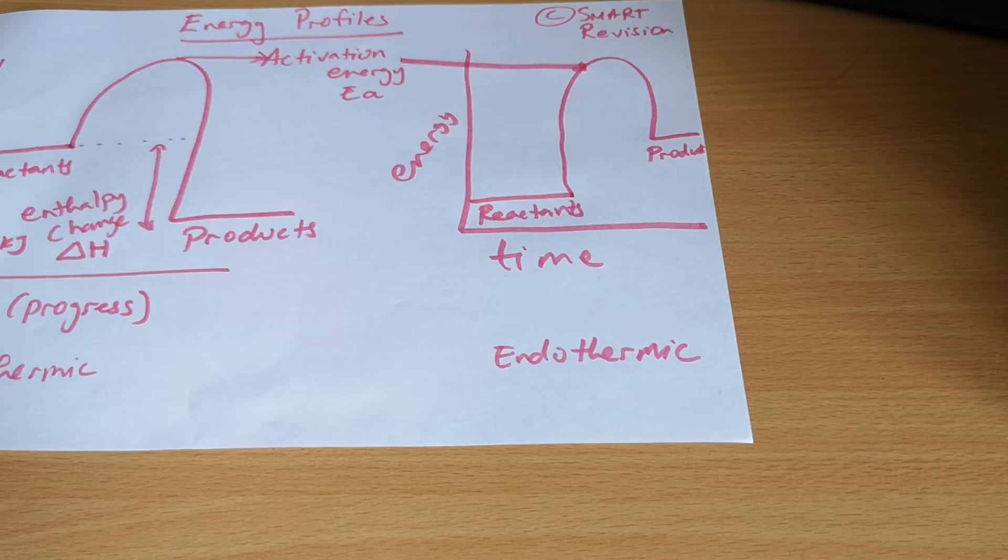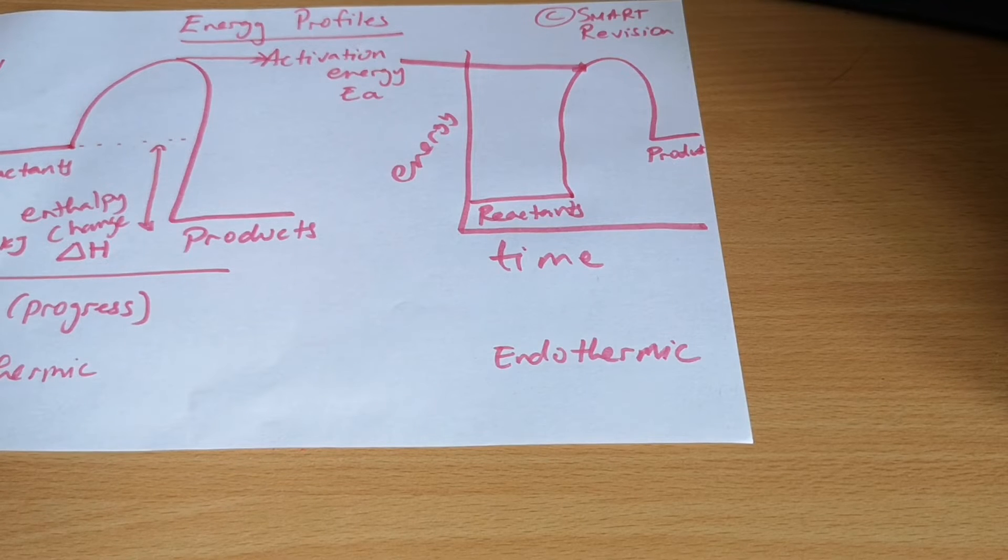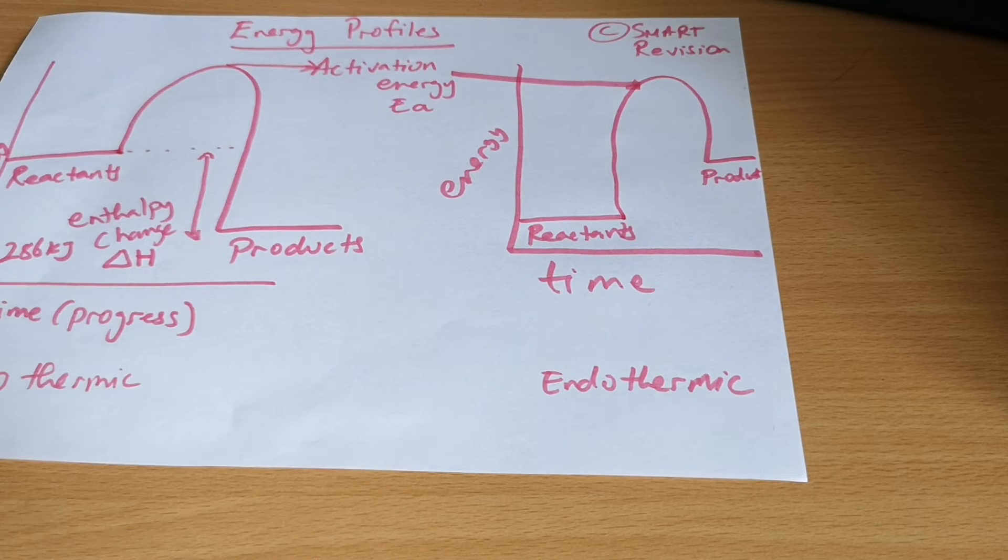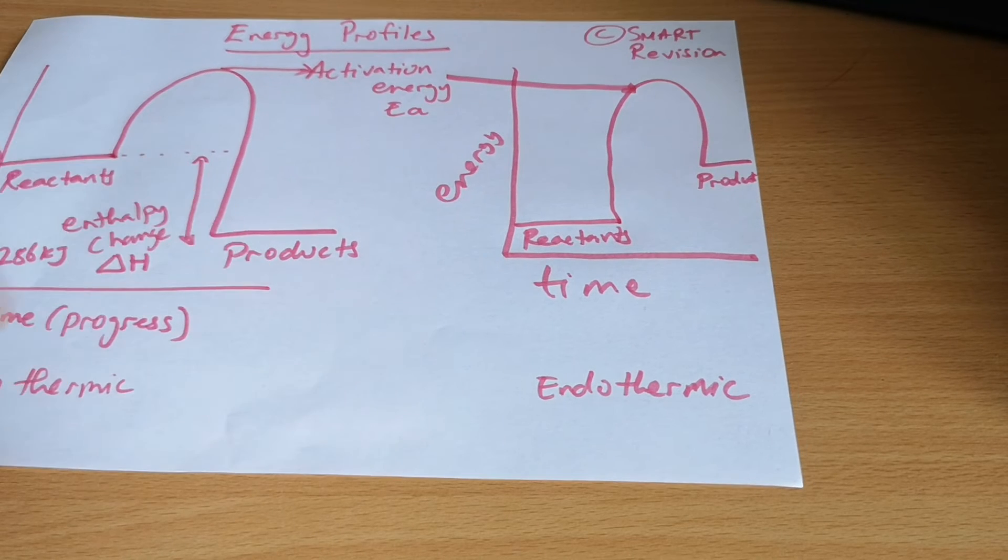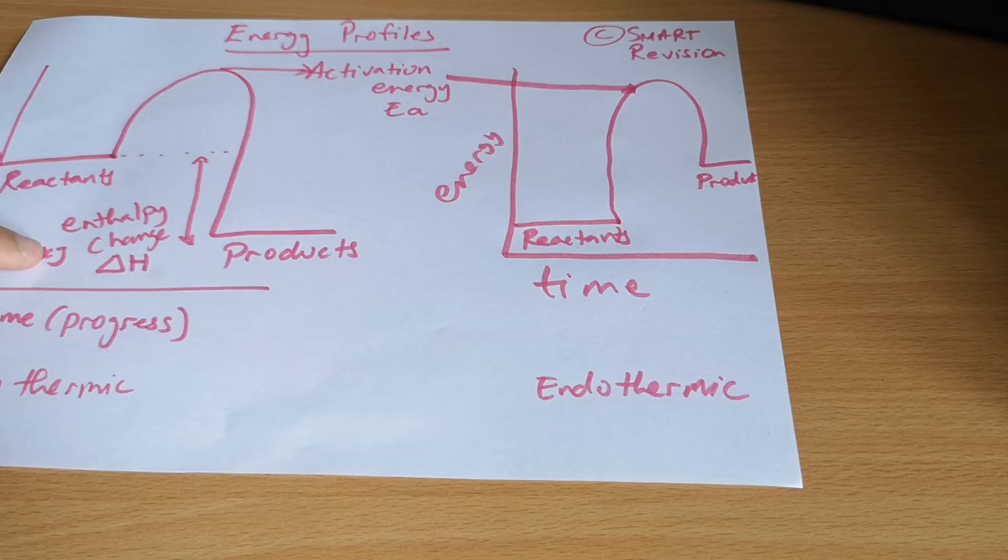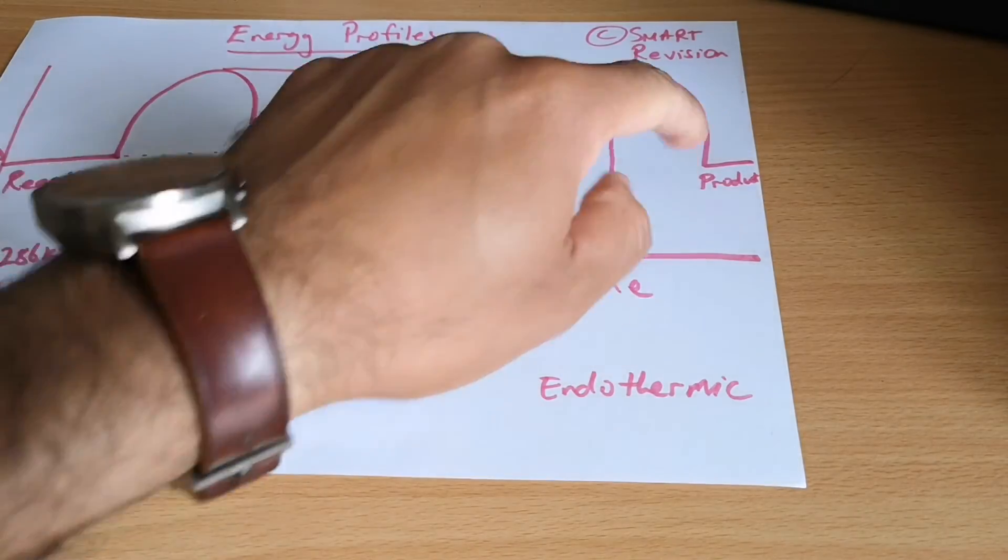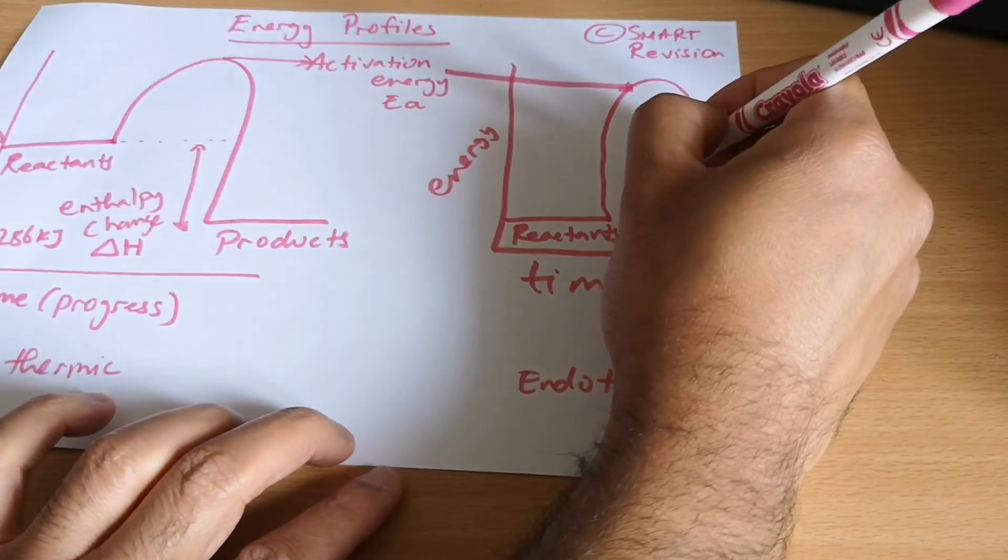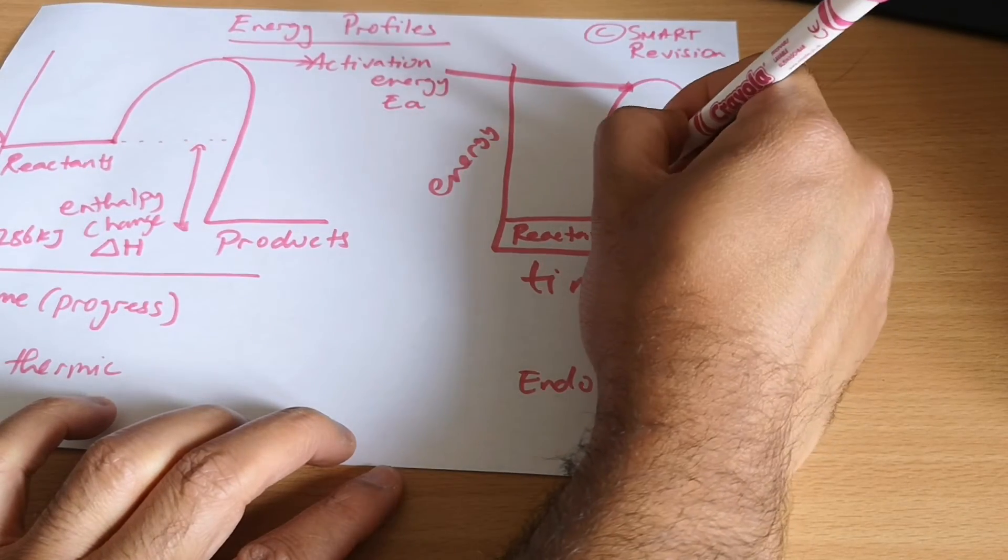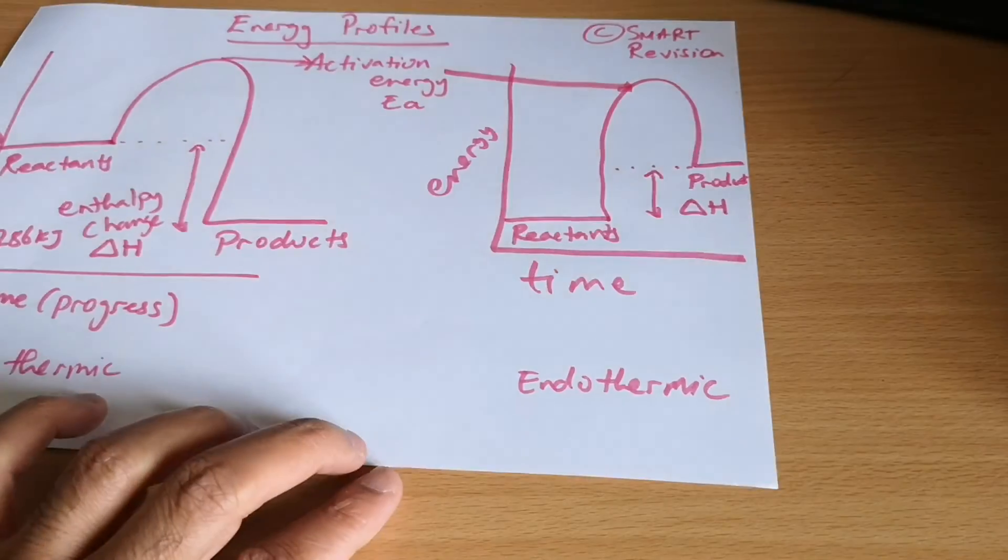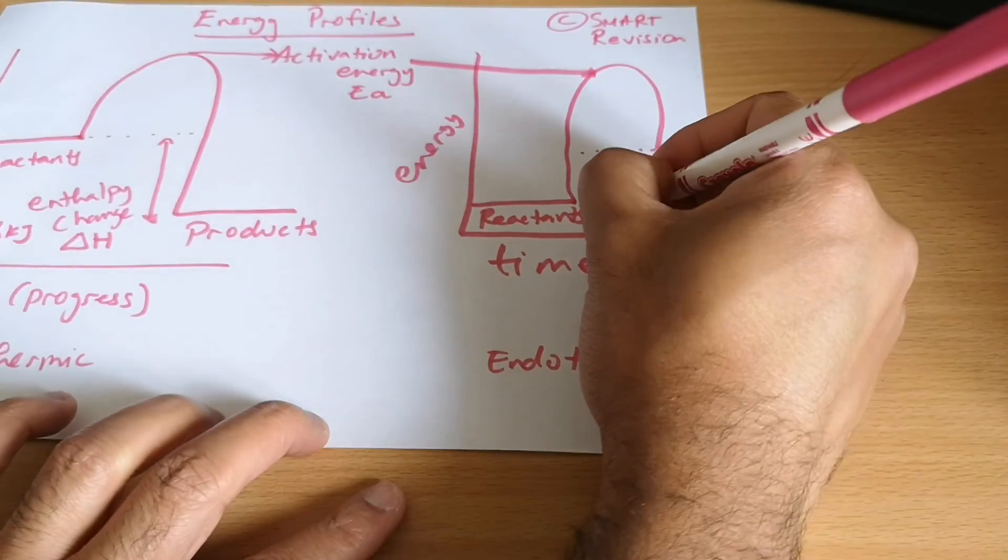So three things that you might be asked to do. You might be given such a thing and asked to label the reactants and the product and the enthalpy change. Same thing on this one: reactants, products, and again this is my enthalpy change. Now this one will be a positive.